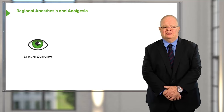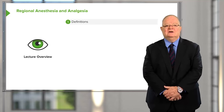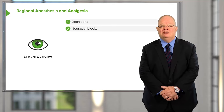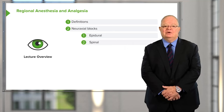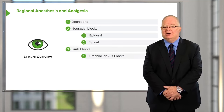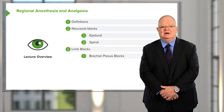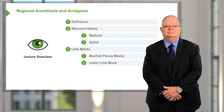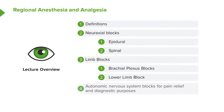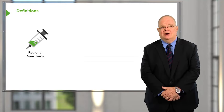The agenda for this lecture will be some definitions, a description of two major neuraxial blocks — epidural and spinal — a description of several limb blocks including brachial plexus block for the upper limb and some lower limb blocks including femoral nerve block and ankle block, a brief discussion of autonomic nervous system blocks, and a more expanded discussion of intravenous regional anesthesia.